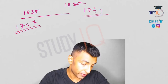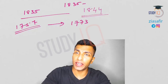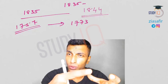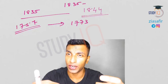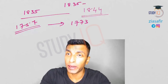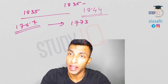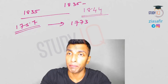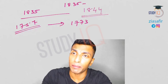In 1773, we discussed the Regulating Act. Two important provisions: the Governor of Bengal became Governor General of Bengal, along with four council members. The Governor General was appointed by the company, and the four members were appointed by Parliament. Through these four members, Parliament was going to control the affairs of the East India Company in India — regulating the company through Parliament.